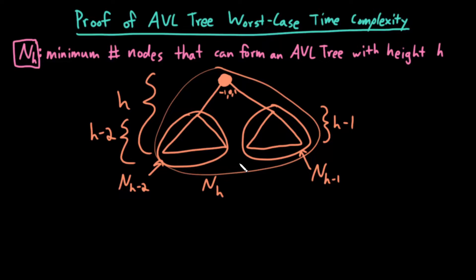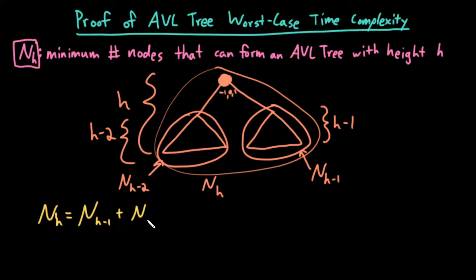So recapping: the right subtree has height h minus 1 with n sub h minus 1 nodes, the left subtree has height h minus 2 with n sub h minus 2 nodes, and the overall tree has height h. This has actually defined a recurrence relation. The total number of nodes n sub h equals n sub h minus 1, plus n sub h minus 2, plus 1 for the root.